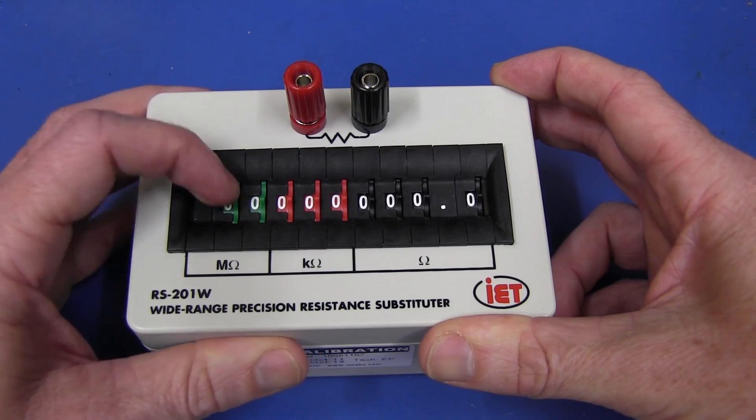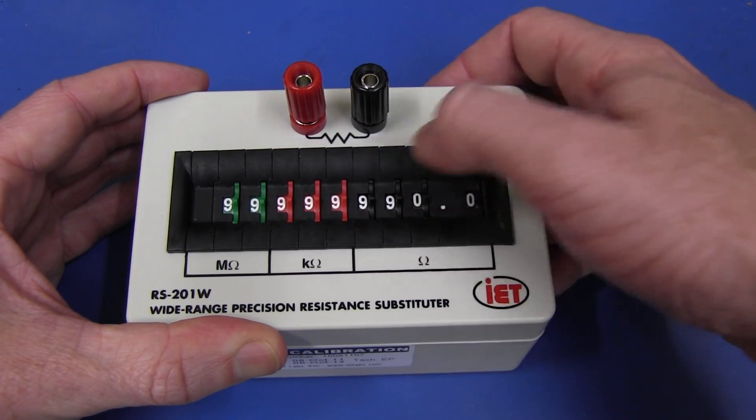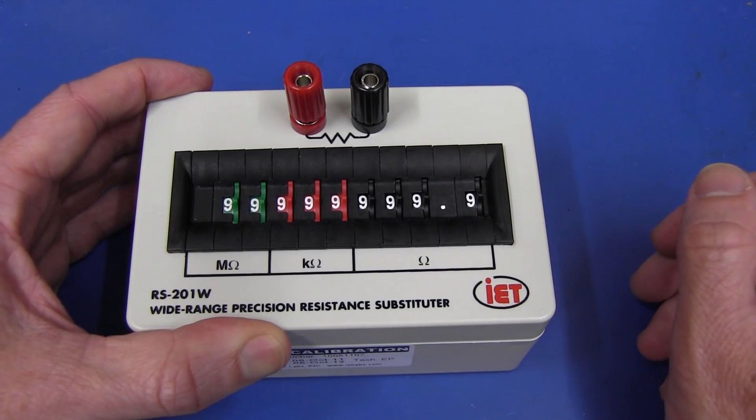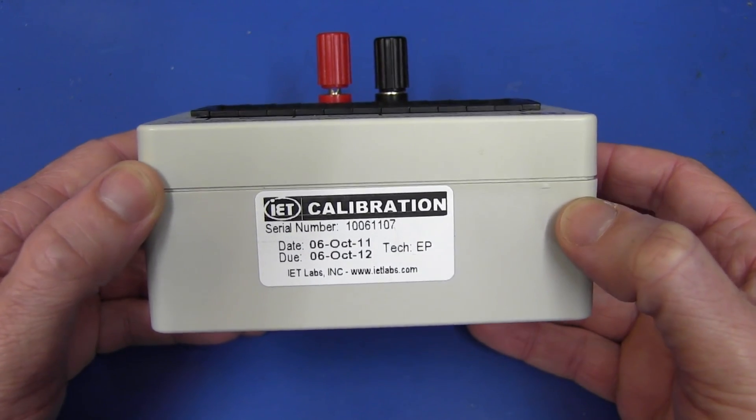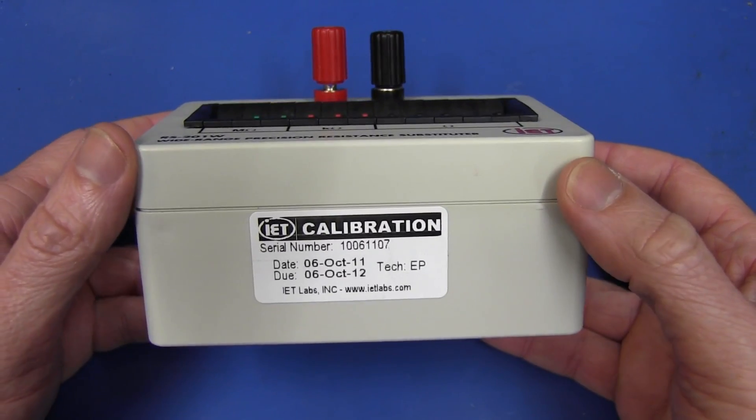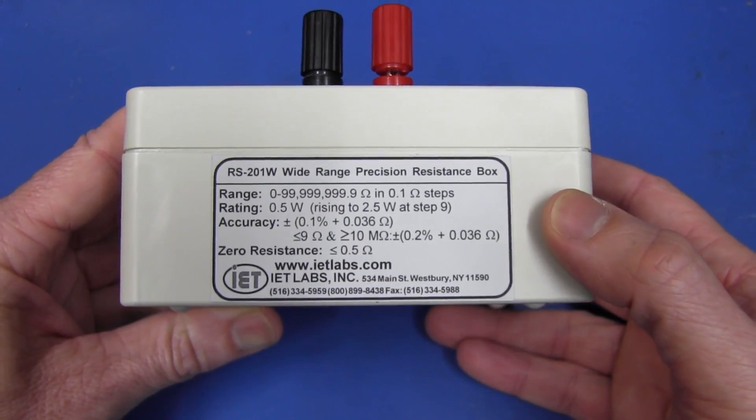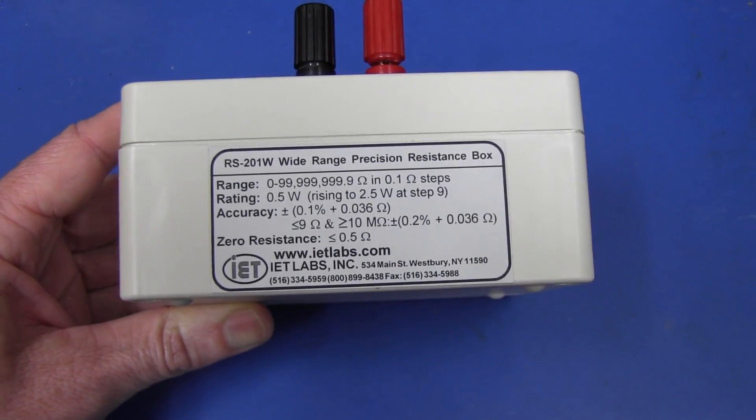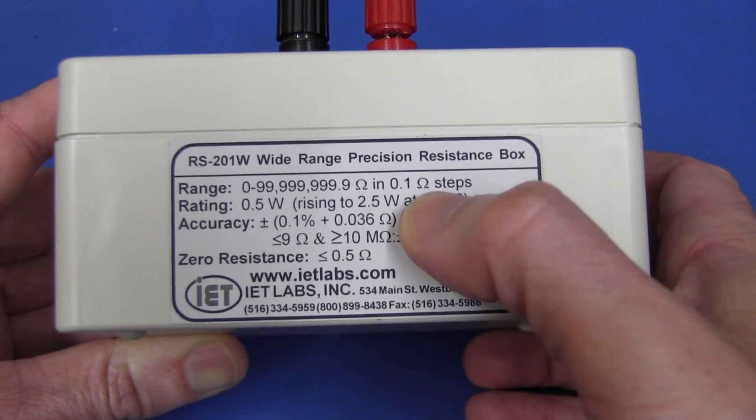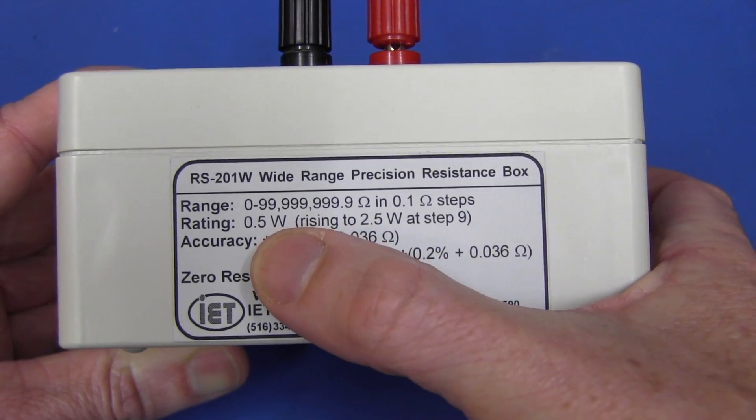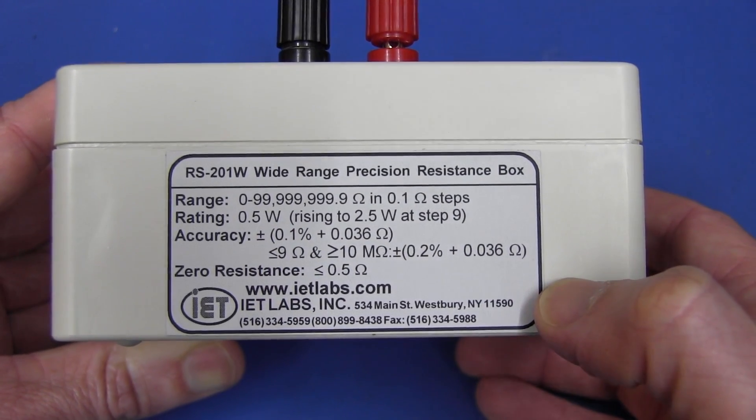And it's nine decades. And we can dial in any value up to 99.99999999 megohms. Crazy. Now this one is actually calibrated, so it comes with a calibration certificate. That's an extra $74 if you want to get it calibrated. But they give you a full test report we'll take a look at. Here's the specs from zero to basically 99.9 megohms. As we said in 0.1 ohm steps, it's a 0.5 watt rating. So each resistor inside will be 0.5 watts.